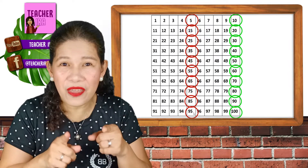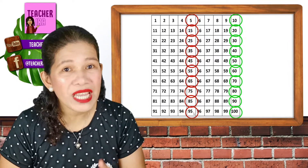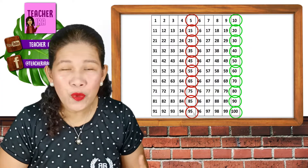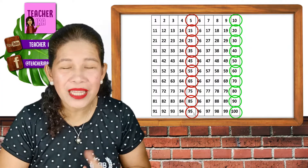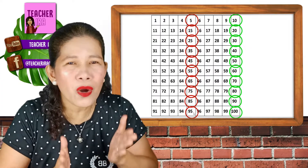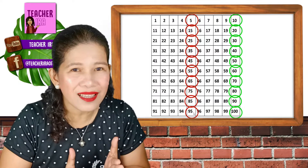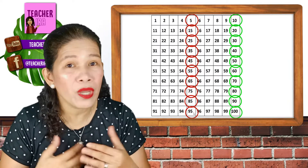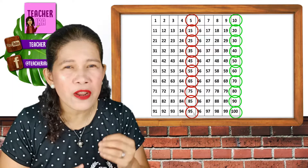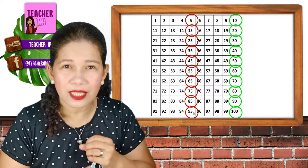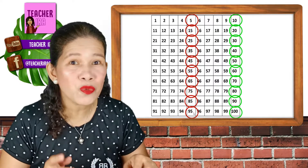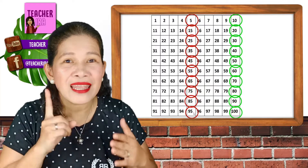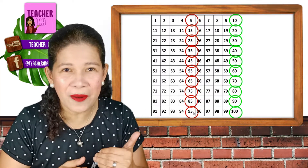Wow! See that? When we skip count by 5, 1 to 100 became so, so easy. Now it's faster — we did it in very, very little time because we skipped a lot of numbers. So let us keep practicing that one.